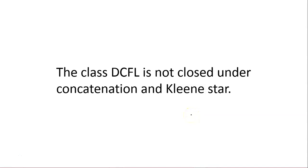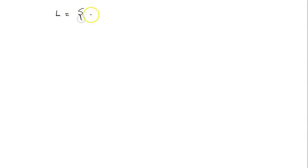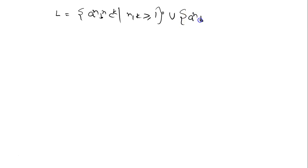The class of DCFL is not closed under concatenation and Kleene star operation. We will see some counter examples for this. Consider this language L1, which is a^n b^n c^k, where k ≥ 1, union a^n b^k c^n, where k ≥ 1.